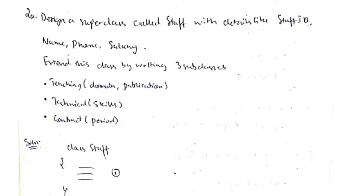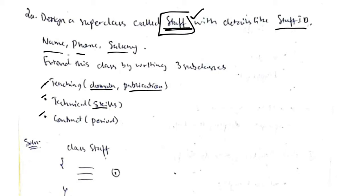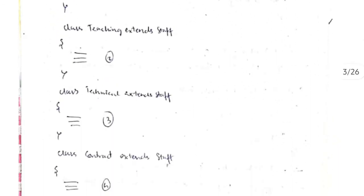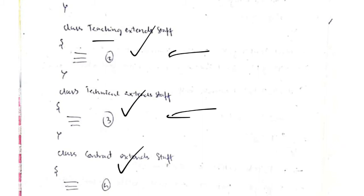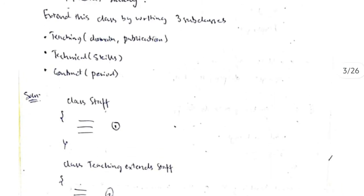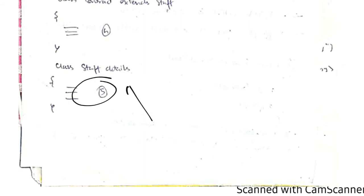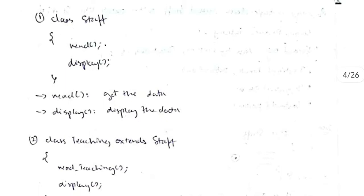Coming to 2a, we use the inheritance concept. We create a superclass Staff with four fields: staff ID, name, phone number, and salary. Then we extend the Staff class with three subclasses: Teaching, Technical, and Contract. Teaching adds domain and publication; Technical adds skills; Contract adds period. Finally, we have a main function in class StaffDetails.